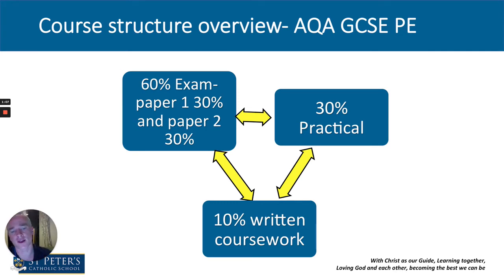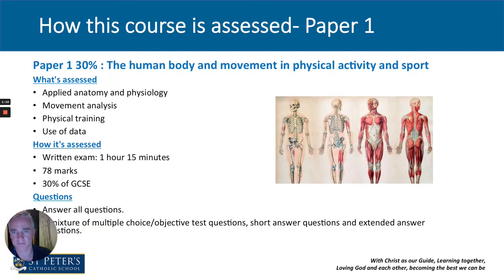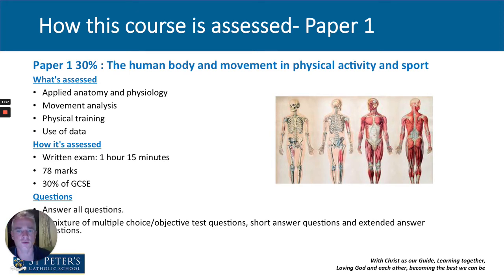And over the two years, we'll be preparing you for all of this. So that's a look at paper one. Paper one is worth 30% and focuses on the human body and movement in PE and sport.